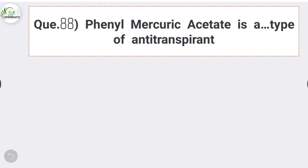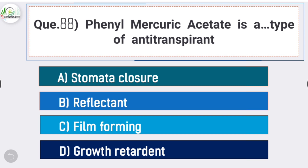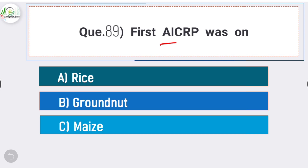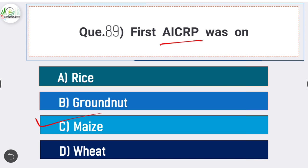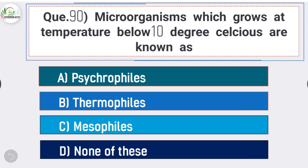Question number eighty-six: Storm is the trade name of pentamethylene. Question number eighty-seven: which of the following is a nematode disease of rice? Answer is option B - Ufra. The nematode disease of rice is Ufra. Question number eighty-eight: phenyl mercuric acetate is a stomatocloser type of anti-transpirant. Question number eighty-nine: first AICRP was on - answer is option C - maize.